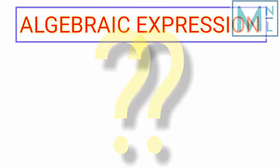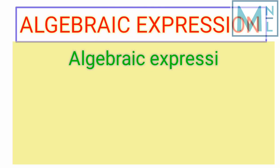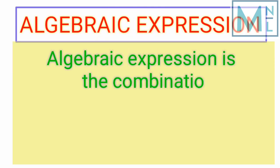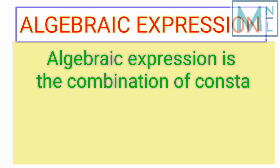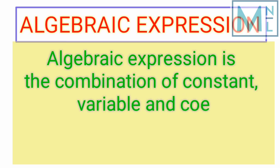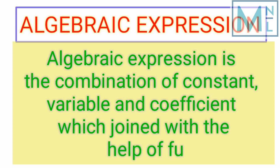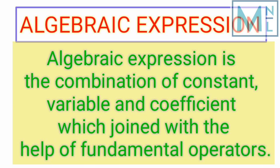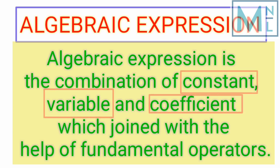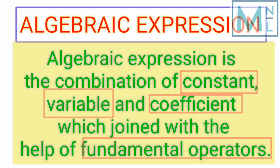What is algebraic expression? An algebraic expression is the combination of constant, variable, and coefficient which are joined with the help of fundamental operators. There are four components: constant, variable, coefficient, and fundamental operators.